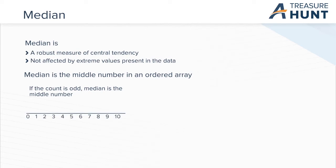For example, given the data set of five numbers, 1, 3, 5, 8, and 9, the median is the middle number, 5.